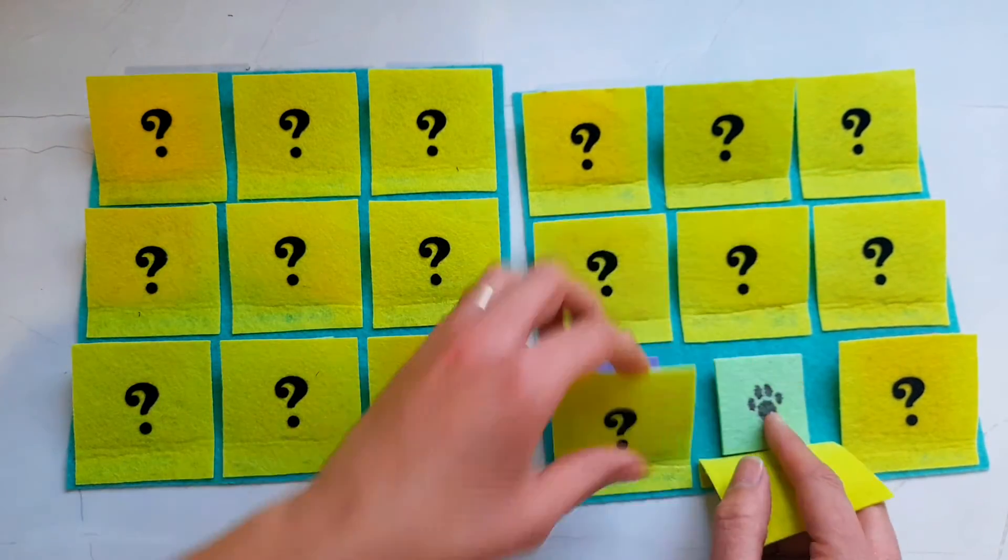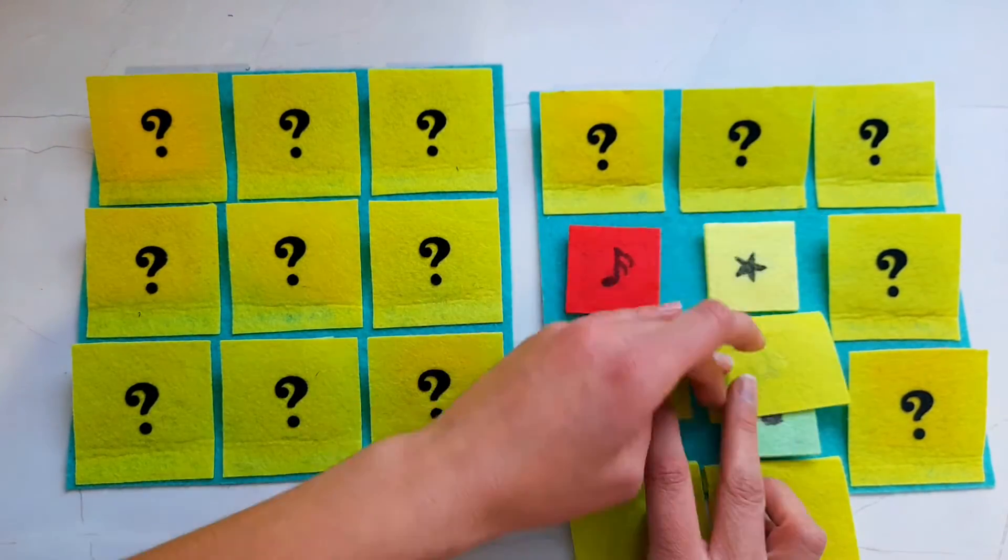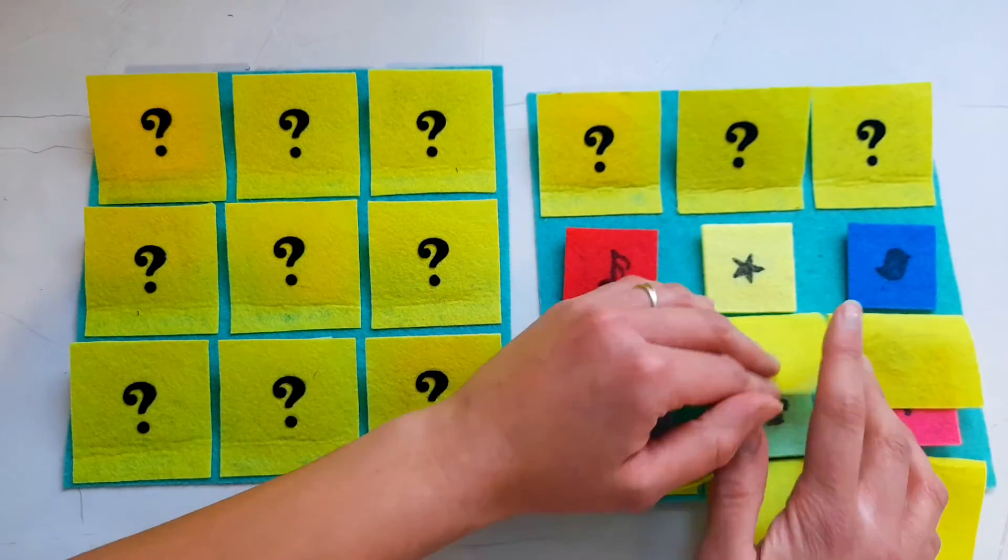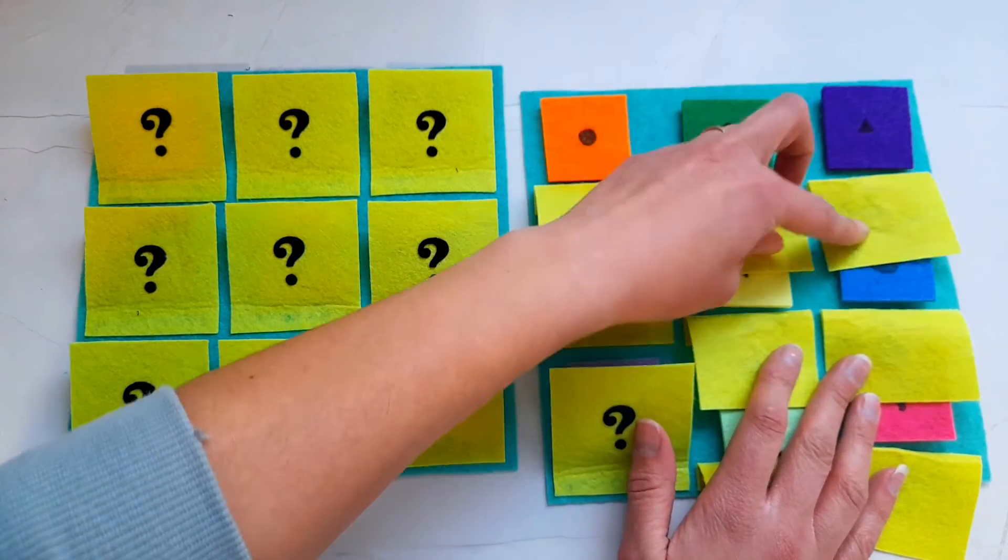All of those pieces will act as the pieces of the matching game. Then I just used a stencil, or you could just use your free hand to draw different shapes on each of the pieces.